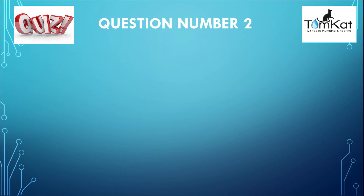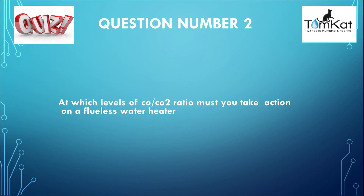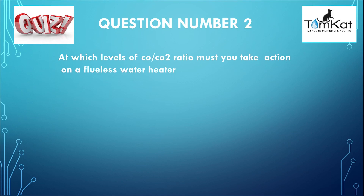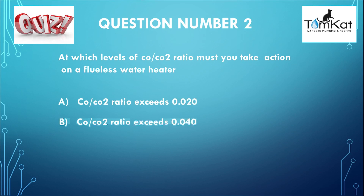Question number two: At which levels of CO/CO2 ratio must you take action on a flueless water heater? Is it A, when the CO/CO2 ratio exceeds 0.020? Is it B, when the CO/CO2 ratio exceeds 0.040? Or finally, is it C, when the CO/CO2 ratio exceeds 0.010? That is the end of question number two.